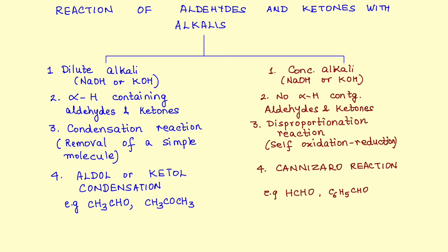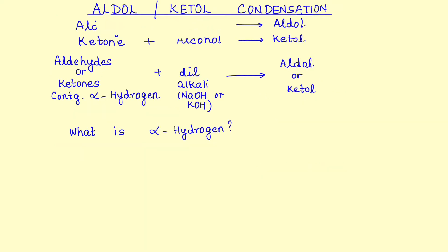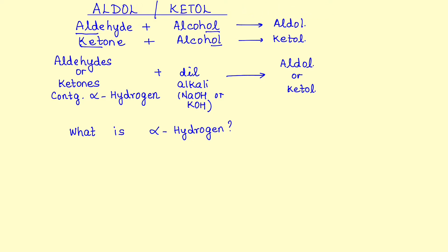You may want to note down this chart for easier reference. For aldol or ketol condensation — the word 'aldol' comes from aldehyde and alcohol together, and 'ketol' from ketone plus alcohol. The product we get from this reaction is actually an addition product; condensation is the next step. Aldehydes or ketones containing alpha hydrogen react with dilute alkali to give us an aldol or a ketol.